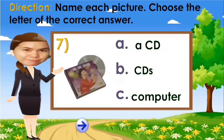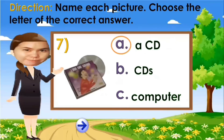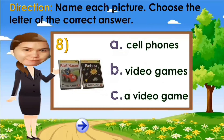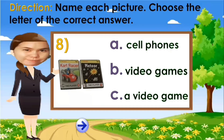A. A CD. B. CDs. C. Computer. Your time starts now. Time is up. The answer is letter A: a CD. Next. A. Cell phones. B. Video games. C. A video game. Your time starts now. Time is up. The answer is letter B: video games. Next.